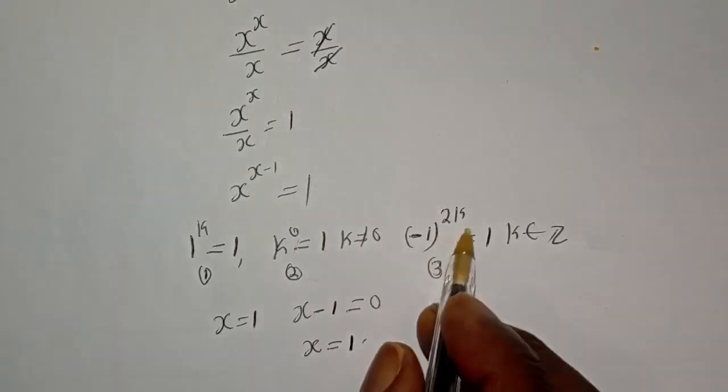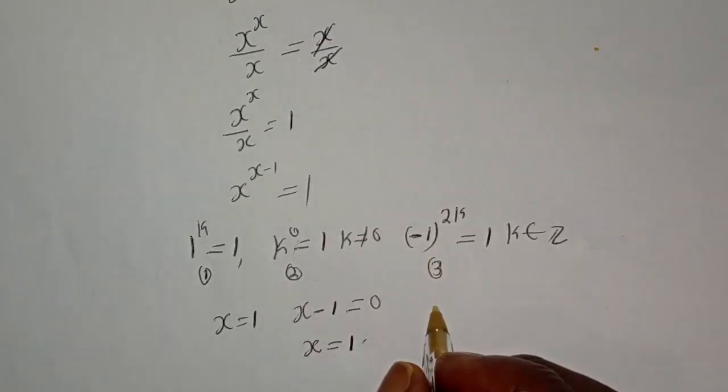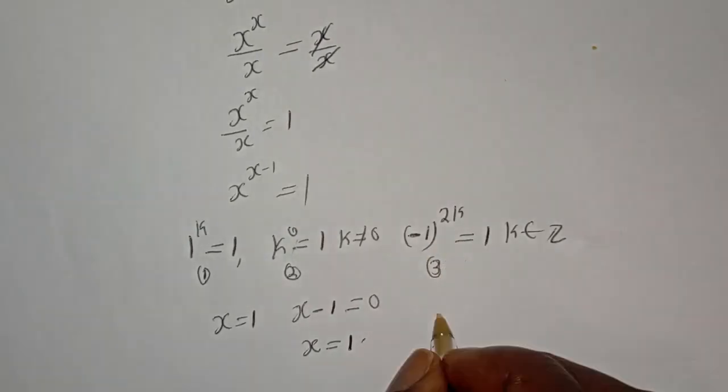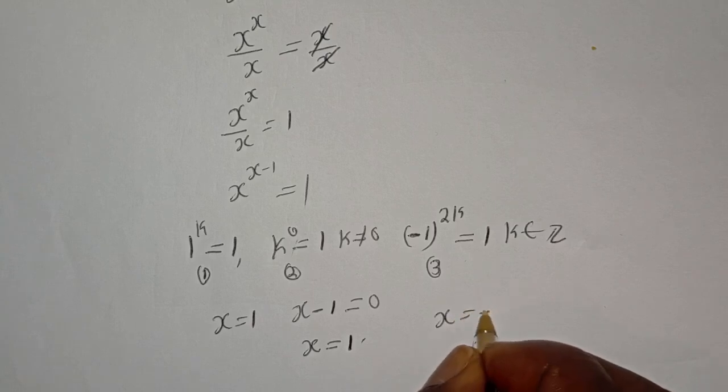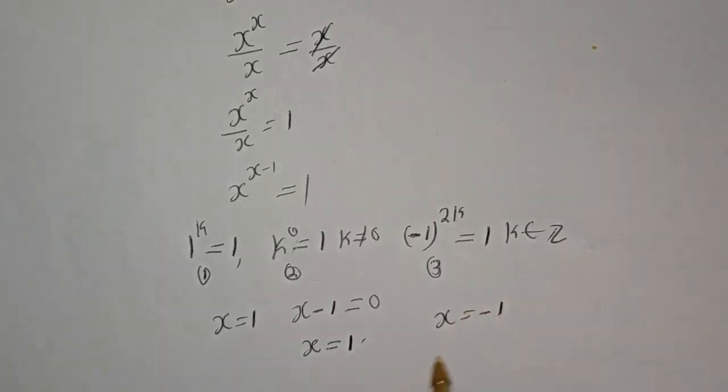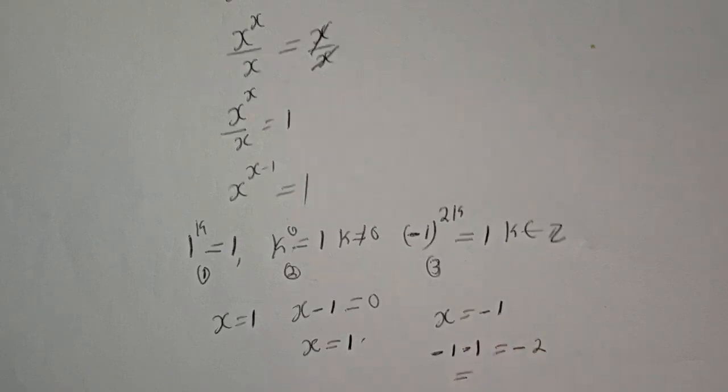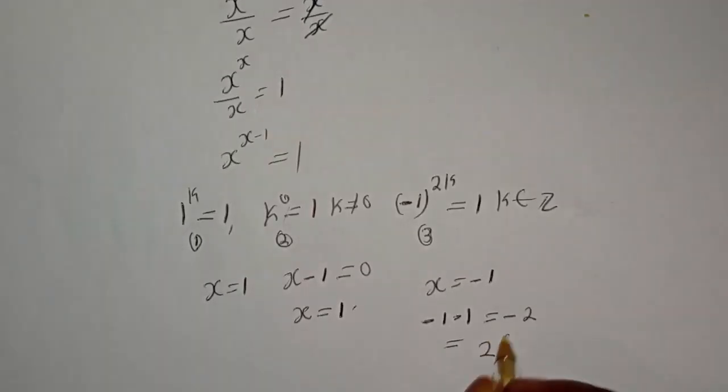And from this rule 3, x is equal to minus 1. And if x is minus 1, then we have minus 1 minus 1 is equal to minus 2. And this is equal to 2 multiplied by minus 1.